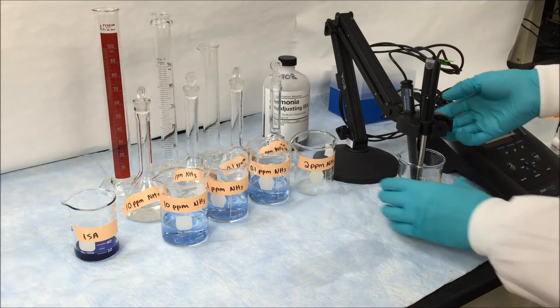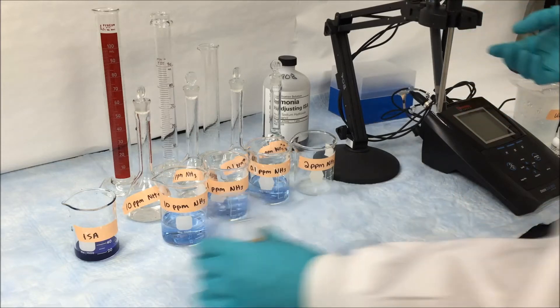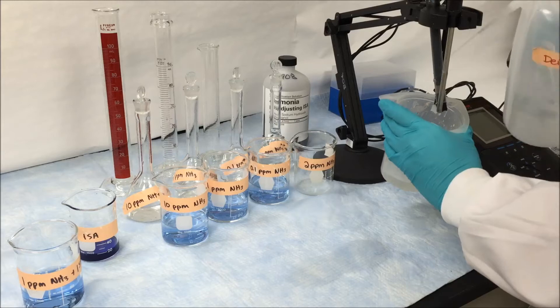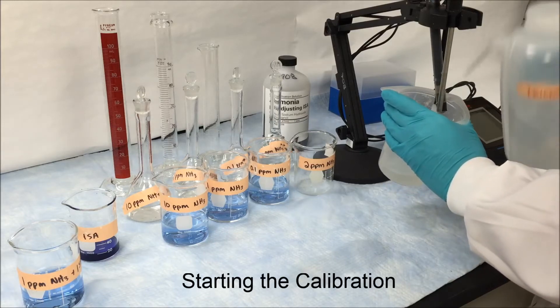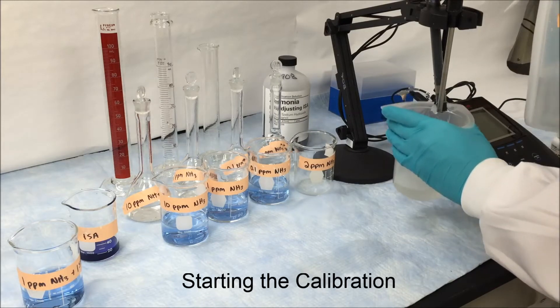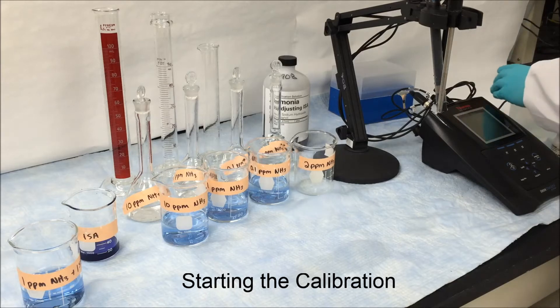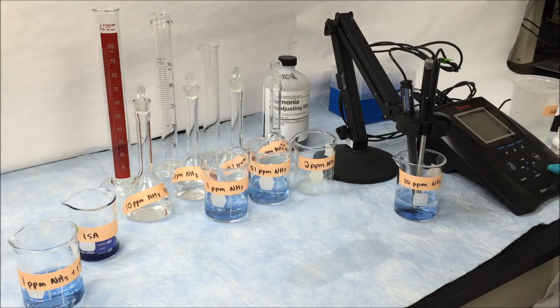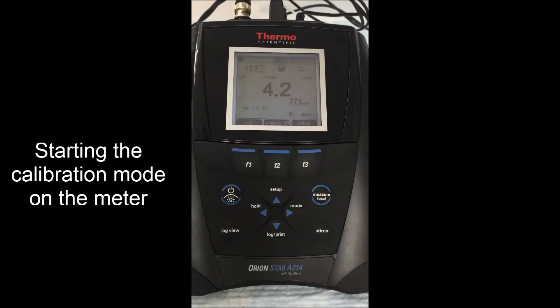Once your calibration standards are complete and your samples are prepared, we want to start our calibration. Take the electrode out using deionized water. Make sure that you've rinsed the electrode thoroughly. Once your electrode has been rinsed, place it in your first standard starting from high to low, going to the 10 part per million solution.